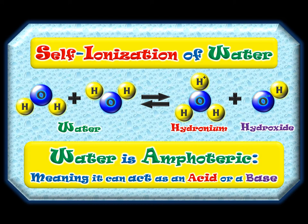So the one acting like a base is the one that becomes hydronium — which is itself an acid. That's just what happens when you gain a proton: you often become a conjugate acid. Remember that hydronium is the conjugate acid of water, whereas hydroxide is the conjugate base of water. It can seem backwards, but that's correct.